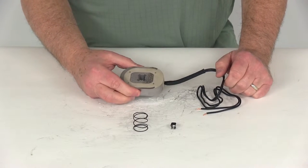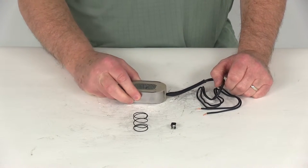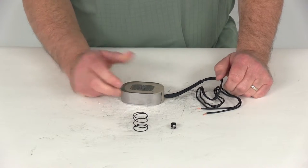Today we're going to take a look at the replacement trailer brake magnet kit for 12-inch brake assemblies on 5,200-pound to 7,000-pound axles.